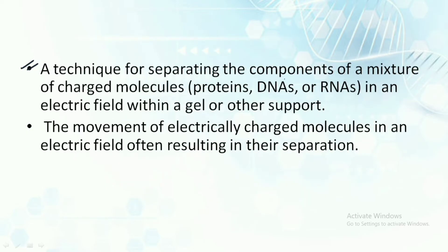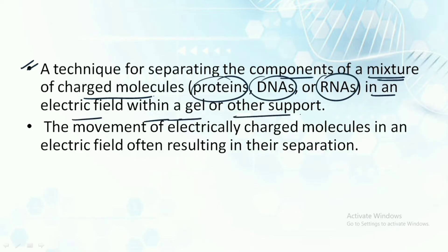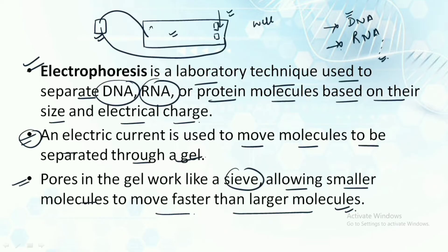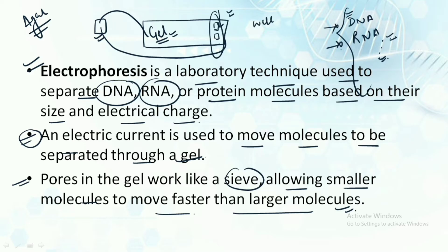Electrophoresis is a technique for separating the components of a mixture of charged molecules — proteins, DNA, and RNA — in an electric field within a gel or other support. We load the complete sample onto the gels using micropipettes. Micropipettes are a type of very small dropper that can transfer very minute amounts of sample onto the gels.